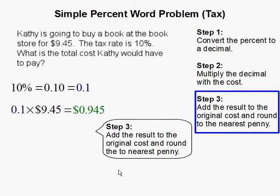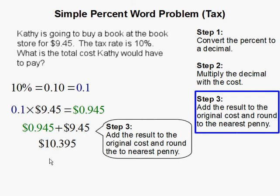Step 3: Add the result to the original cost and round to the nearest penny. So our result is 0.945, and with tax, we always have to add the tax rate to the original cost, which is $9.45. Adding those two numbers, we get 10.395. Whenever we deal with money, we always have to round to the nearest penny, so 10.395 rounds to $10.40. Our resulting answer is $10.40.